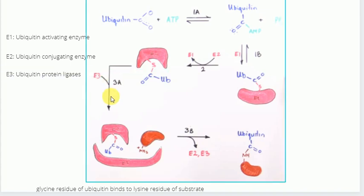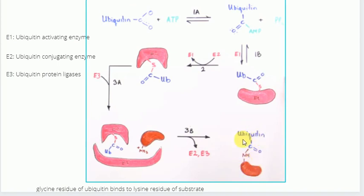The third type of enzyme, E3, are the ubiquitin protein ligases. The E3 enzyme will bind the active ubiquitin molecule to the epsilon amino group of the lysine residue of the protein substrate, thereby forming an isopeptide bond, with the ubiquitin molecule attached to the substrate protein — the red part here indicates the substrate protein. By the end of this process, ubiquitination has labeled the target protein with ubiquitin. Not only one ubiquitin molecule is added to the substrate protein; there are many ubiquitin molecules that can be added, and depending on the type of ubiquitination, the fate of the ubiquitinated protein will be determined.